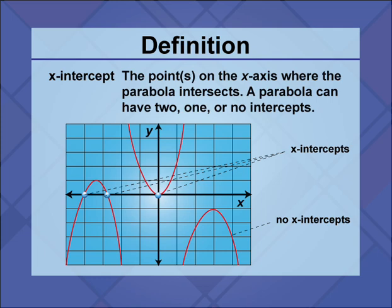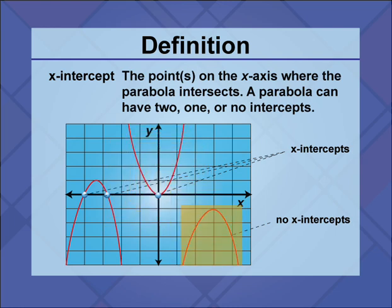In the graph shown, parabolas intersect the x-axis. In the parabola on the left, there are two x-intercepts. The middle parabola shows a single x-intercept. And the parabola on the right shows no x-intercepts.